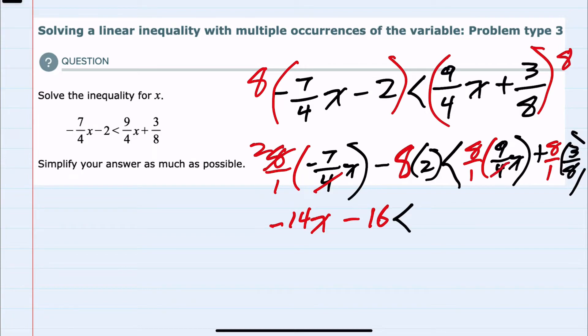On the right-hand side, 4 goes into 8 twice. So 2 times 9x would be 18x. And then on the right, the 8 and 8 cancel. So plus 3.